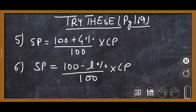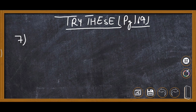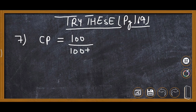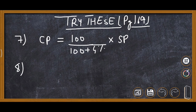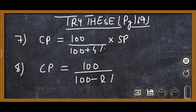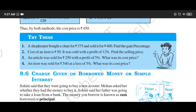Now we will write the formulas for cost price. If gain percent is given, CP = 100 upon (100 plus gain percent), multiplied by SP. If loss percent is given, CP = 100 upon (100 minus loss percent), multiplied by SP.